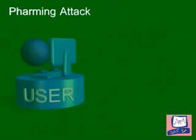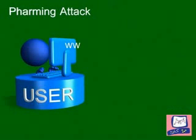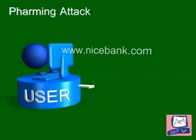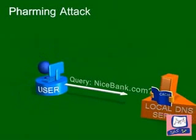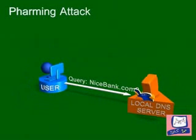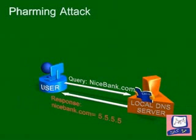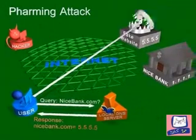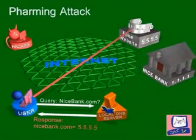The local DNS server finds the malicious site in its cache and forwards the user to the malicious site. Such attacks are called pharming. They send people to websites that contain tools for stealing information or infecting computers.